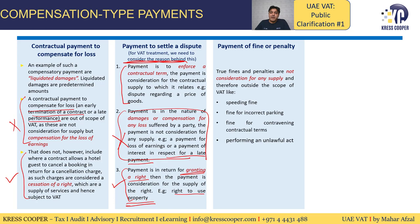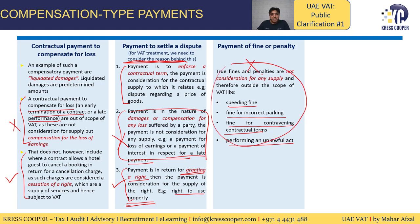Fines and penalties are always out of scope — there is no supply against them. Examples include fines for speeding, incorrect parking, contravening a contractual term, or performing an unlawful act. All such fines will be out of scope and not subject to tax.